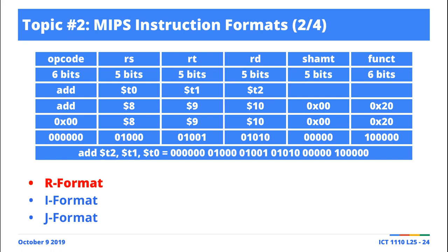This stream of bits: the first six bits are the opcode. This is an R-formatted instruction. The opcode is 00 because all R-formatted instructions have an opcode of zero. The next five bits are the source register, then the next five is the target or source number two, followed by the destination, then the shift amount — which in this case is zero because we're not shifting anything.